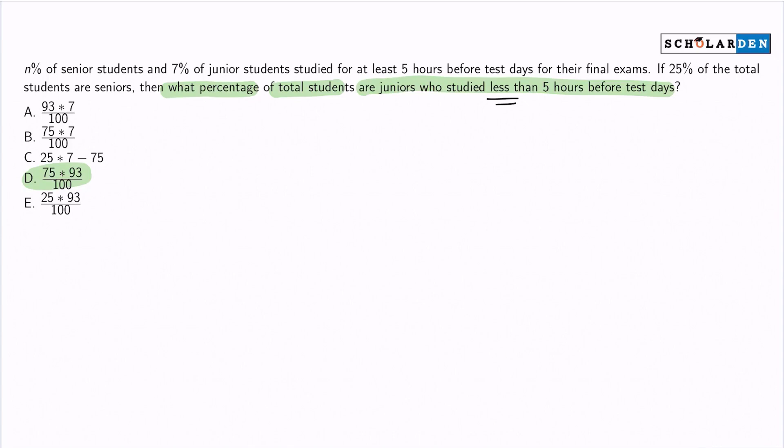We see here that seven percent of junior students studied for at least five hours before test days. This problem could throw us for a loop very quickly, but thankfully we see that seven percent of juniors studied for at least five hours. And if we're looking for less than five hours, well that means that 93 percent of juniors studied for less than five hours.